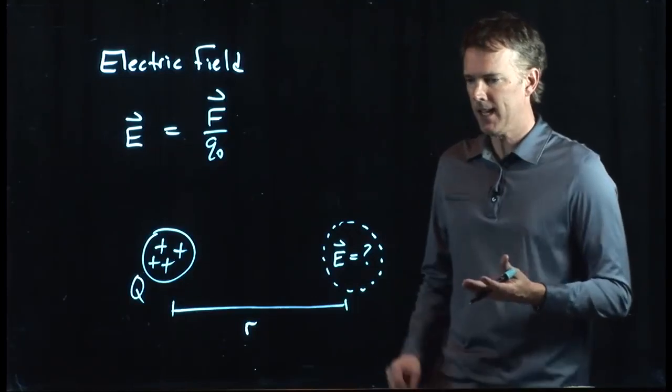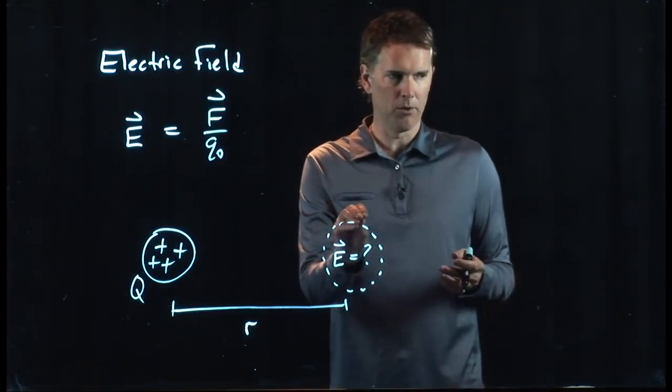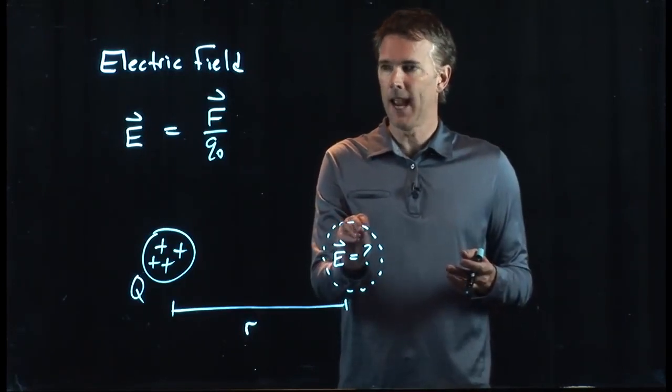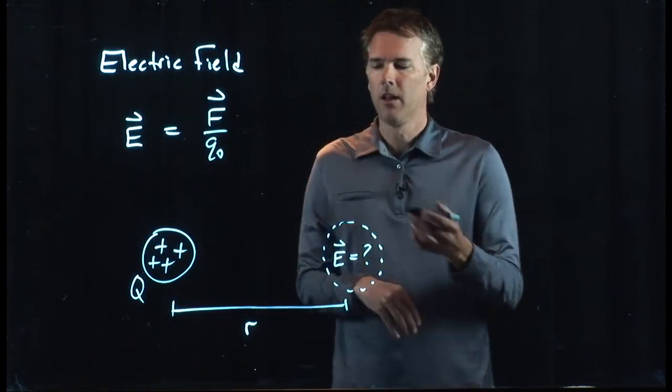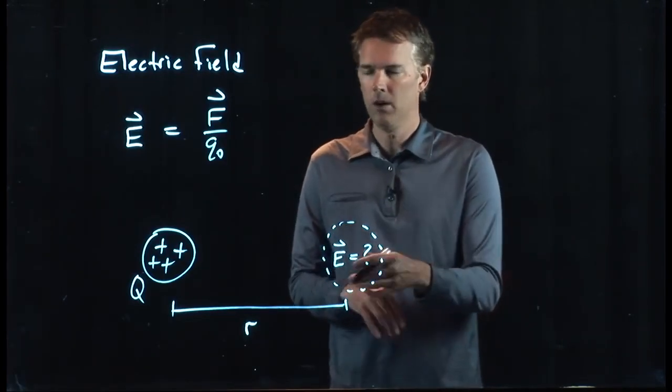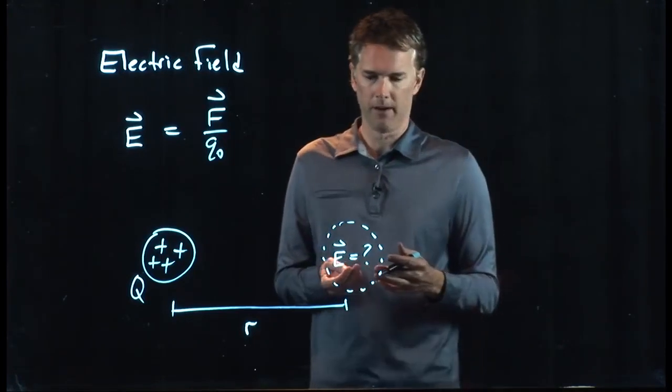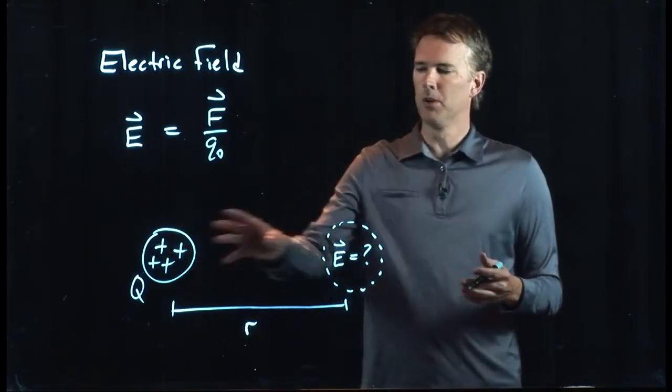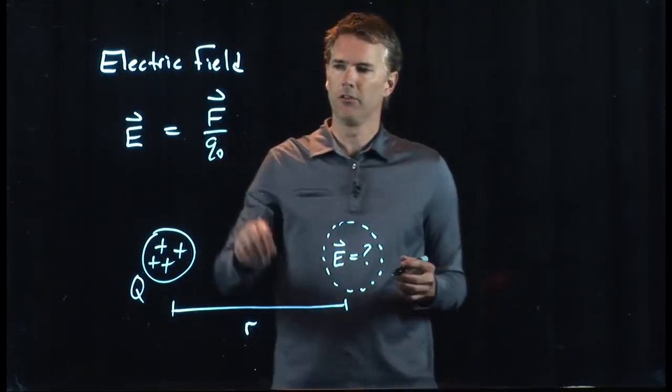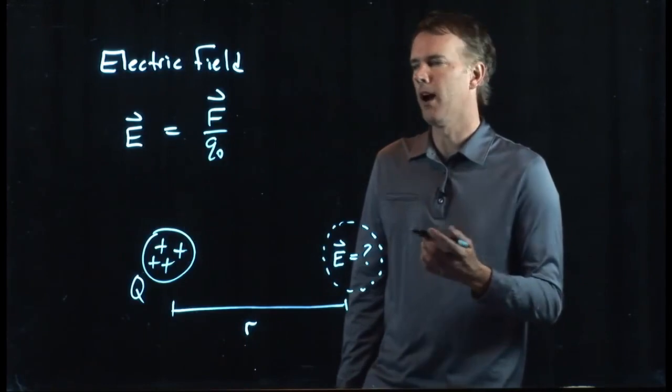What we mean is, if I put a test particle there, would it experience a force? And if the answer is yes, then there is an electric field there. If the answer is no, then there's zero electric field there. All right, in this case, we know that it will experience a force, so there must be an electric field there, and the electric field is apparently F over Q-naught.